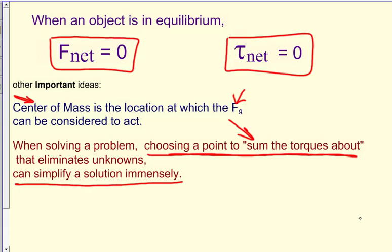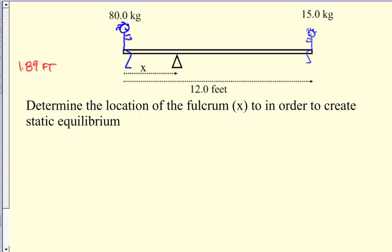So we're looking at a classic seesaw problem, and I'm sorry that my graphics are so poor on here, but we have an 80 kilogram person with a child that's 15 kilograms and the fulcrum. This point of support is right here. And so we're trying to determine the location of the fulcrum in order to create static equilibrium. In other words, that these guys are perfectly balanced.